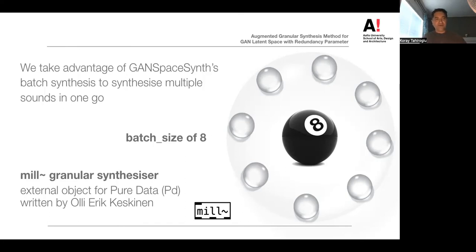Just to clarify why this synthesis problem happened to be custom to our setup, is that because in Alterity, we take advantage of GANSpaceSynth's batch synthesis to synthesize multiple sounds in one go. Using the batch size of eight, we form a small sphere around the current position in the latent space and spread eight different points evenly on the sphere's surface, resulting in eight different latent vectors.